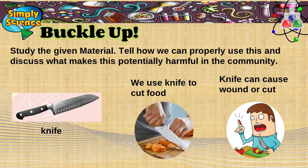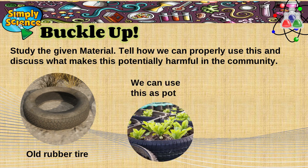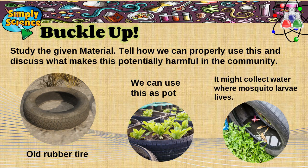Always ask the guidance of your guardian or parents while using a knife. Number two: old rubber tire. An old rubber tire can be used as a flower pot in our garden; however, it might collect water where mosquito larvae live. So remember, we have to dispose of rubber tires properly.